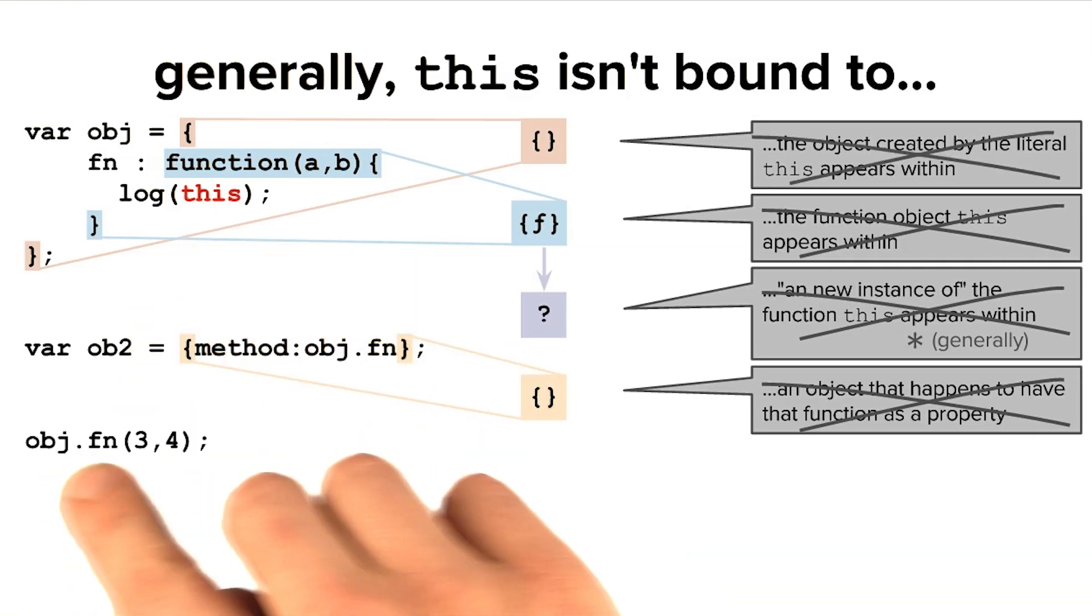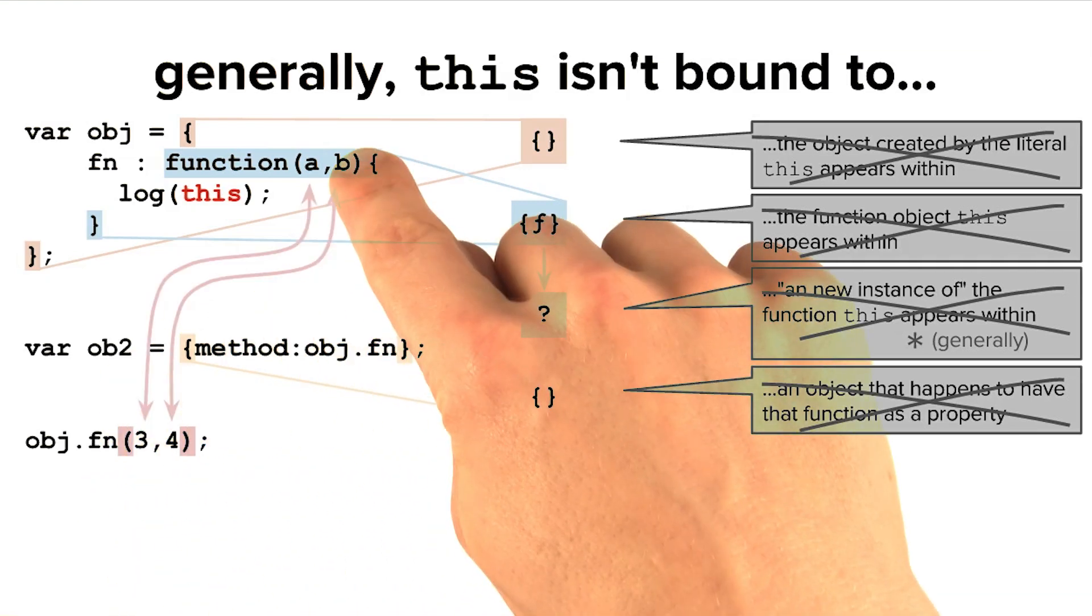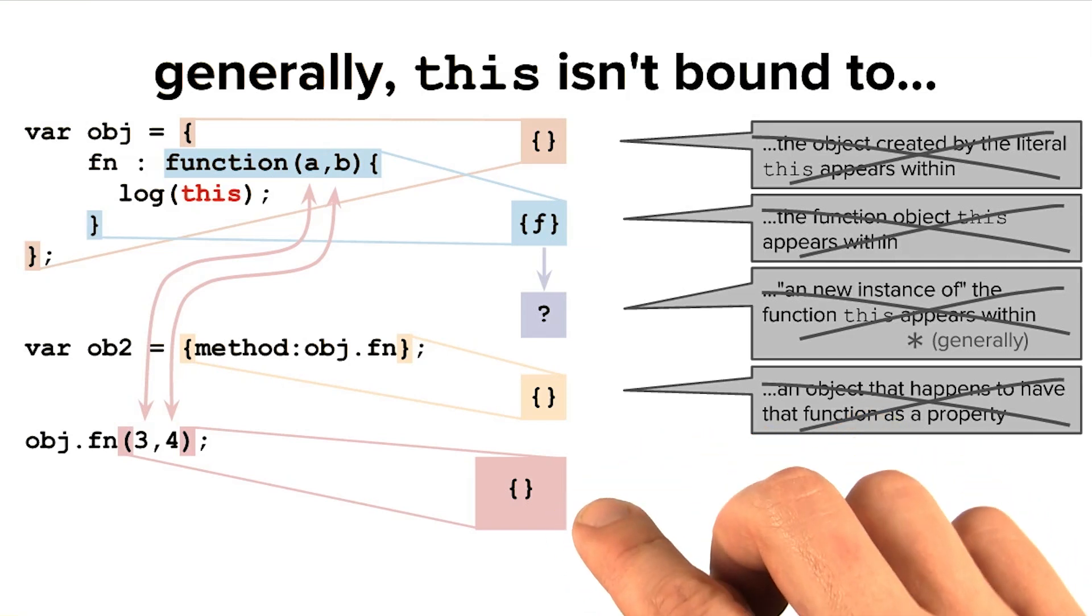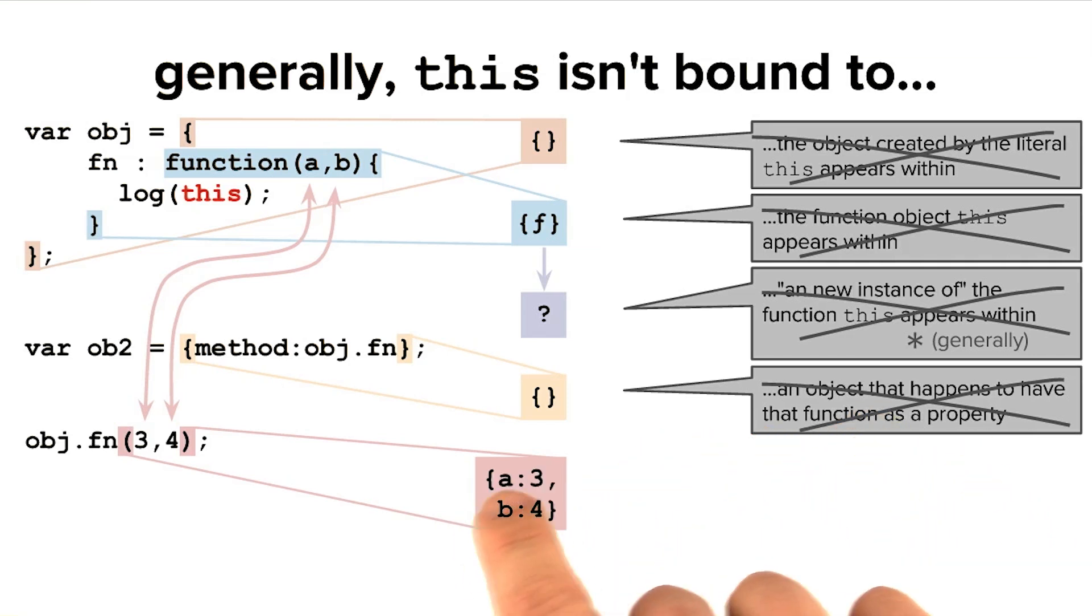Lastly, we know we'll eventually call this function. And as we pass values in to be bound to the positional parameters of the function, we could imagine that that invocation creates a set of bindings, or a scope. That scope must be modeled somewhere in memory. And maybe it's represented as an object, where A maps to three in this case, and B maps to four.